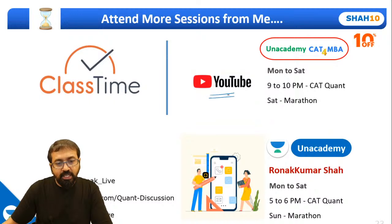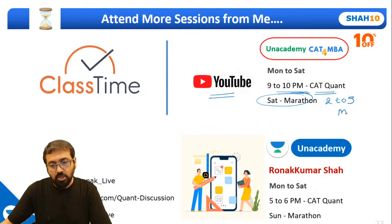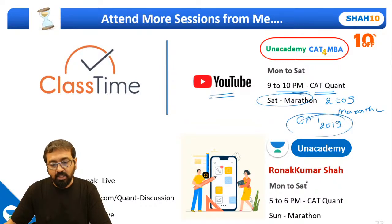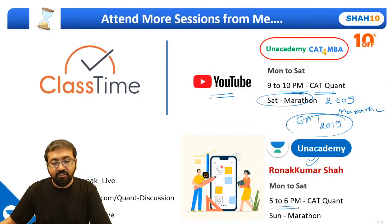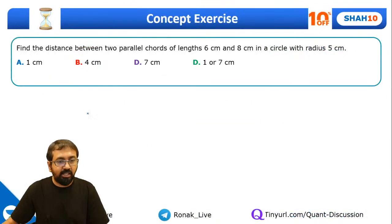A quick note on session timings: YouTube sessions are conducted 9 to 10 p.m. every day for CAT quant, and Saturday has a 2 to 5 p.m. marathon session on complete CAT 2019 analysis. On the Unacademy app, sessions run 5 to 6 p.m. daily, with Sunday marathon sessions from 2 to 5 p.m.